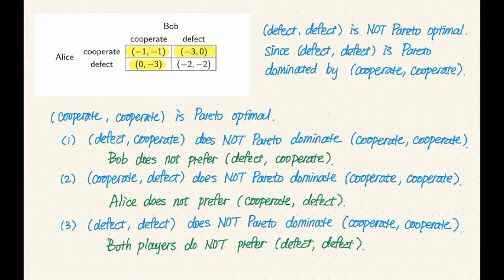We need to verify that defect-defect is not Pareto optimal, and then we also need to verify the other three outcomes are Pareto optimal. I'm only showing you the reasoning for two of these four cases, but the other two cases are similar to cooperate-cooperate.